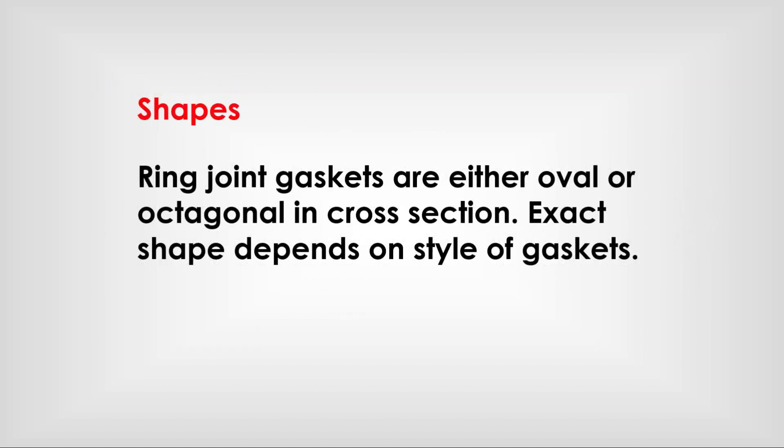Shapes: ring joint gaskets are either oval or octagonal in cross section. The exact shape depends on the style of the gasket.